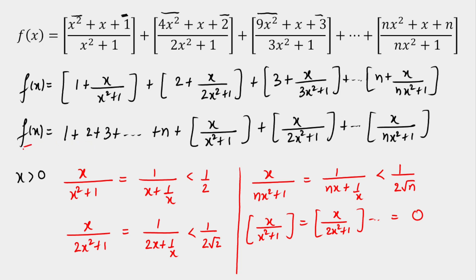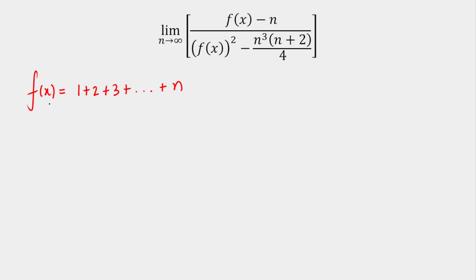Since all the GIF values are 0 for x > 0, it is straightforward to define the function. f of x equals clearly the sum of the first n natural numbers, which I can write as n(n+1)/2.